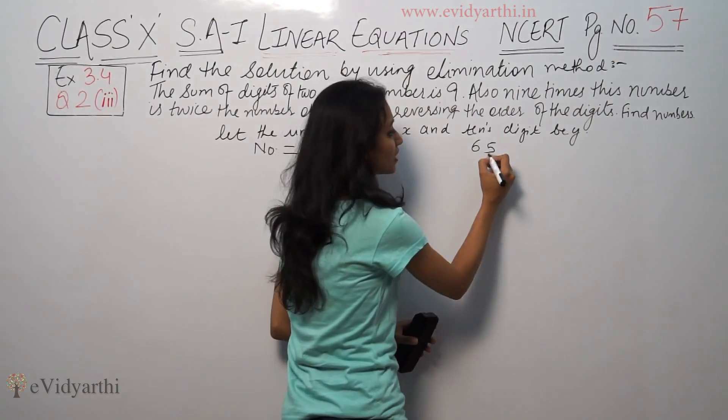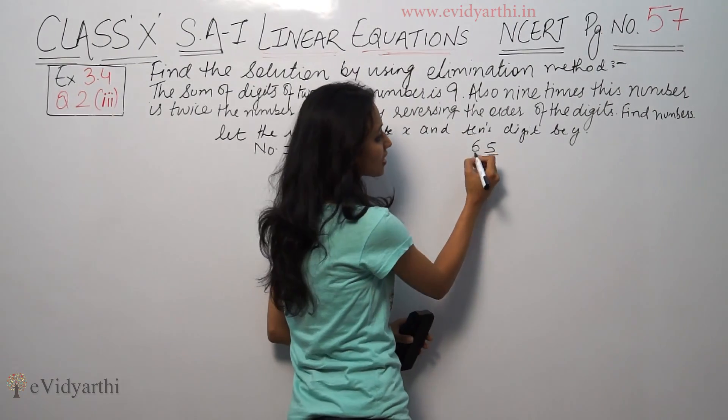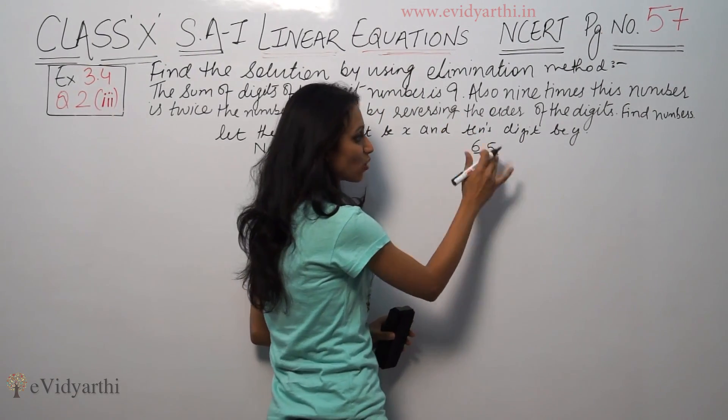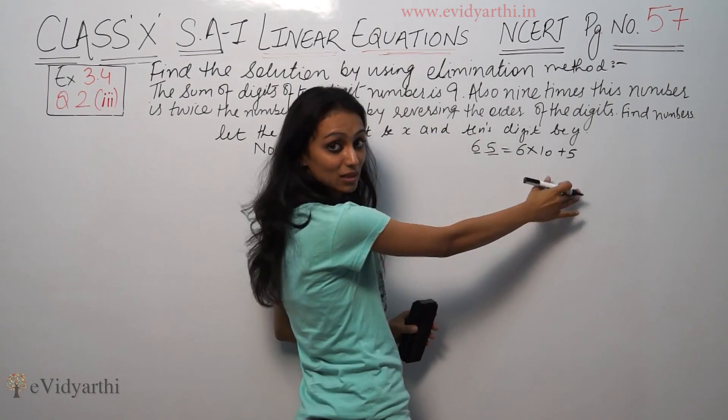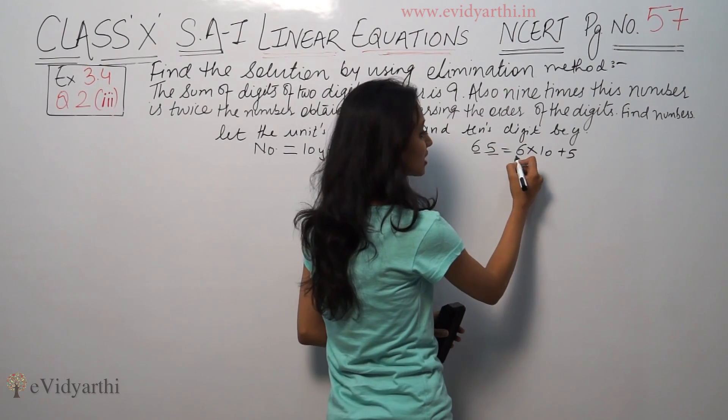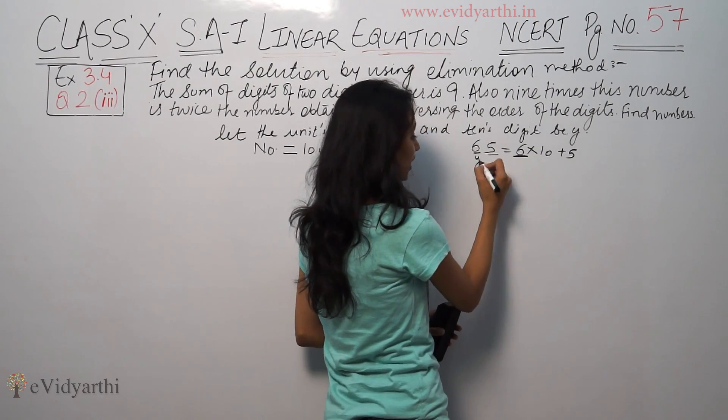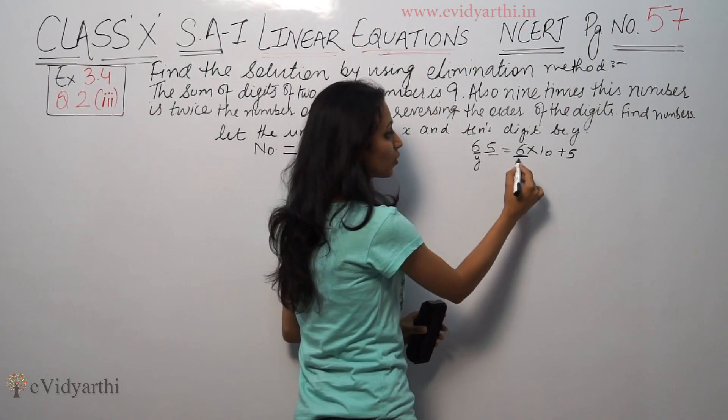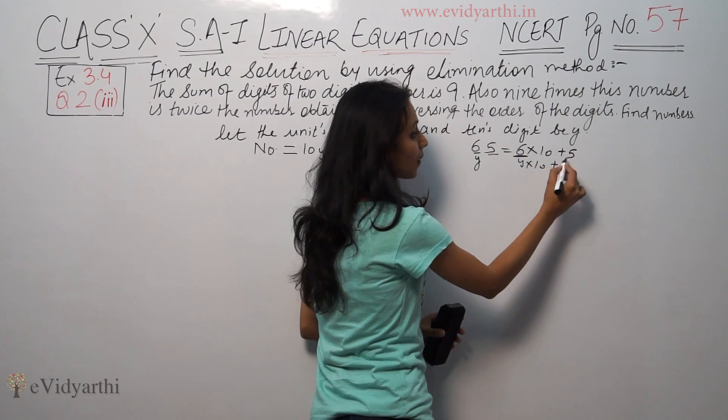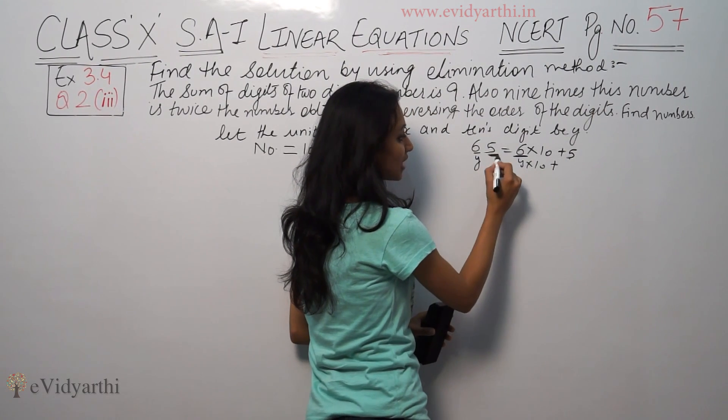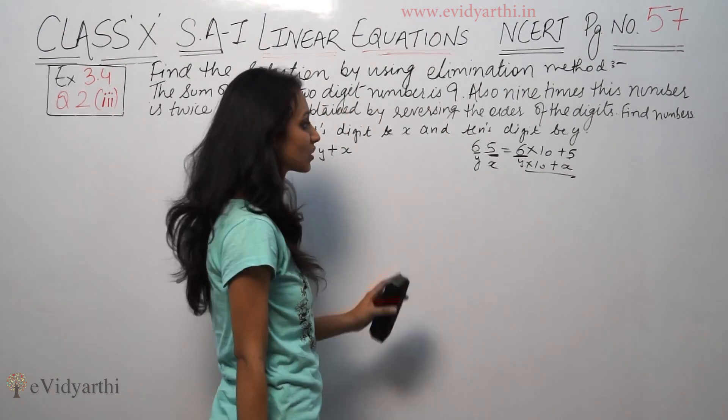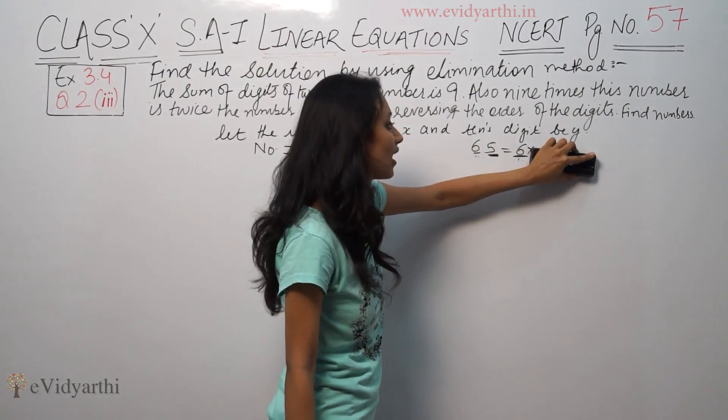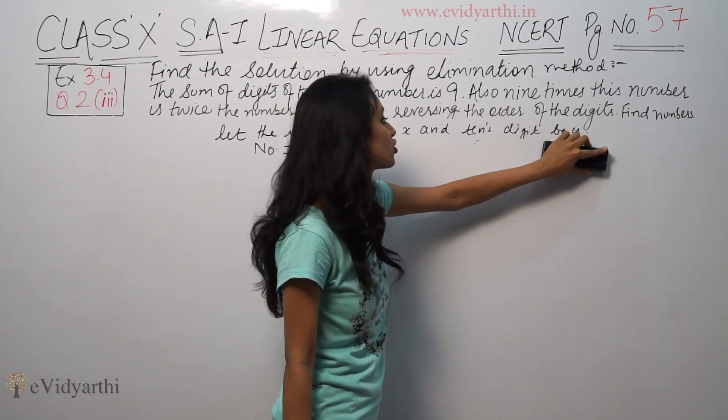Let's take an example. Suppose the number is 65. 5 is the units digit, this is the tens digit. 65 is equal to 6 times 10 plus 5, which is 60 plus 5. 6 times 10 means y is multiplied by 10, plus the units digit x equals 5. This equals 10y plus x.